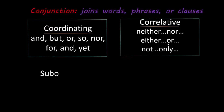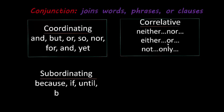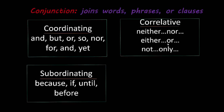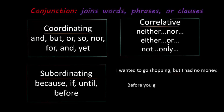Next, we have subordinating conjunctions. Subordinating conjunctions join two clauses or thoughts. Some examples would be because, if, until, or before. For example, 'I wanted to go shopping, but I had no money' — but is a coordinating conjunction here. Another example: 'Before you go, clean your room' — before is the subordinating conjunction.